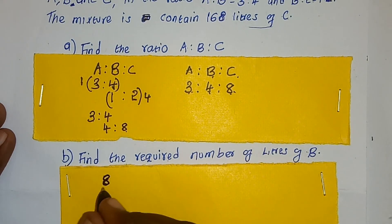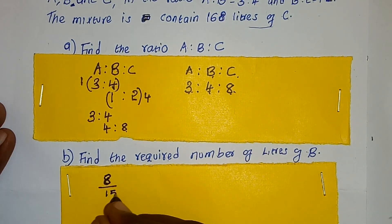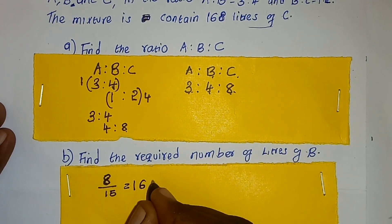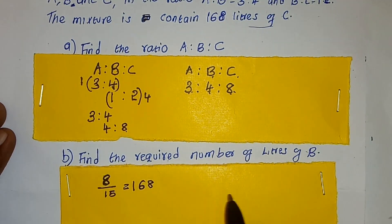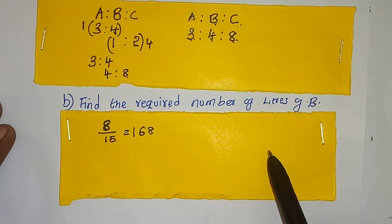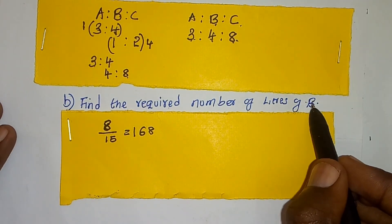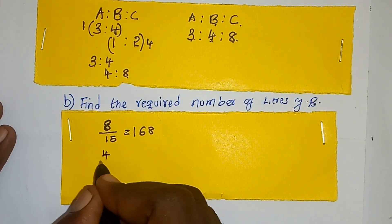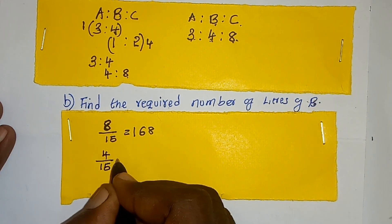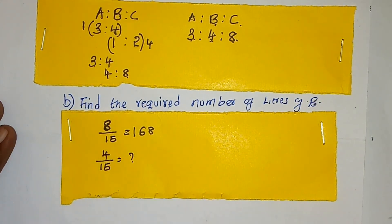What about the ratio of B, which is 4 out of total 15? Then we cross multiply.